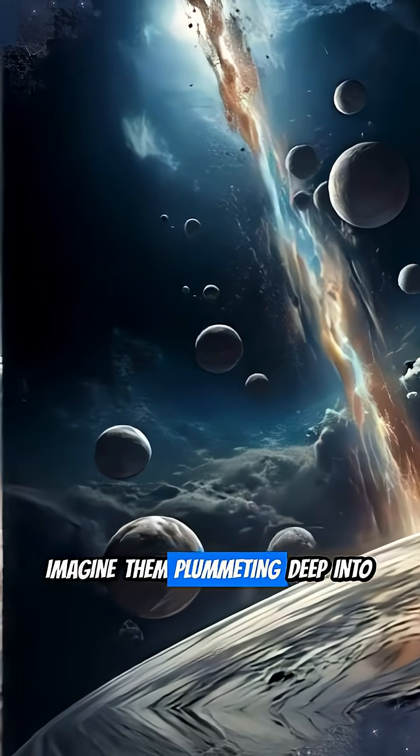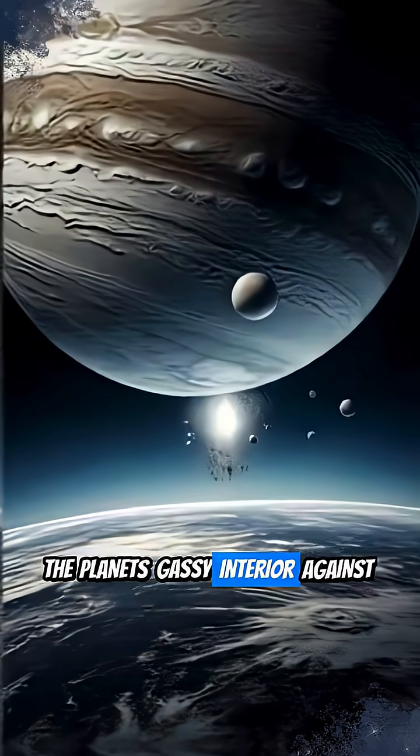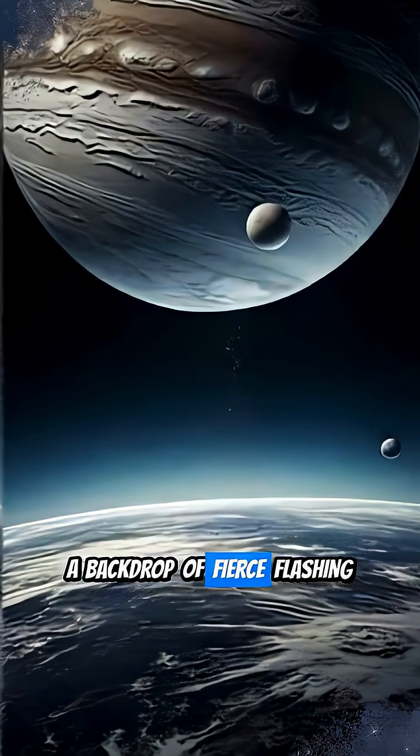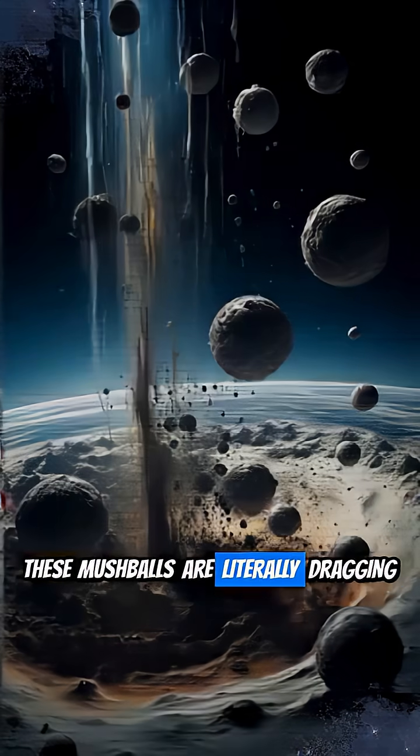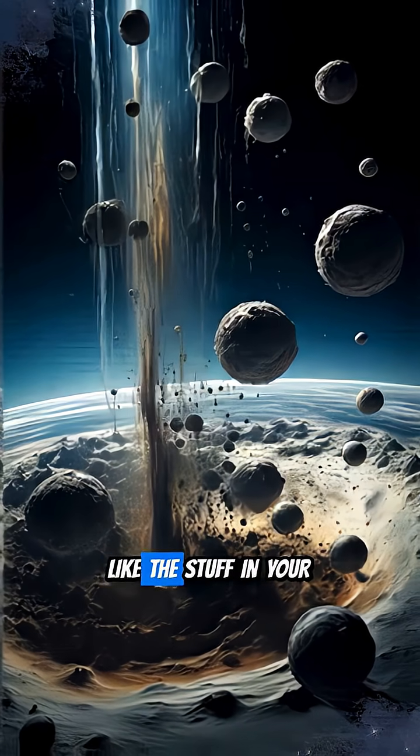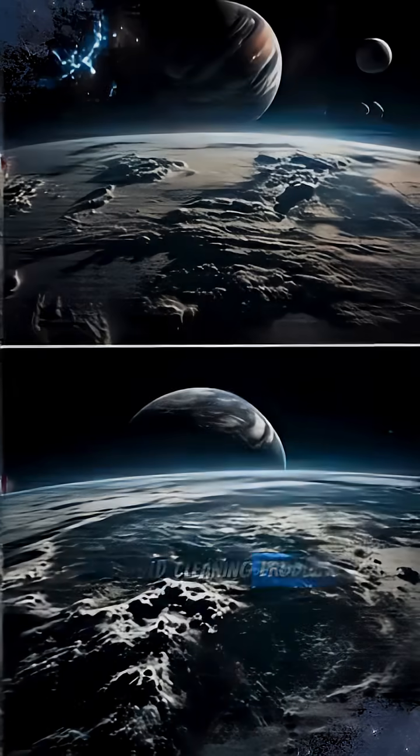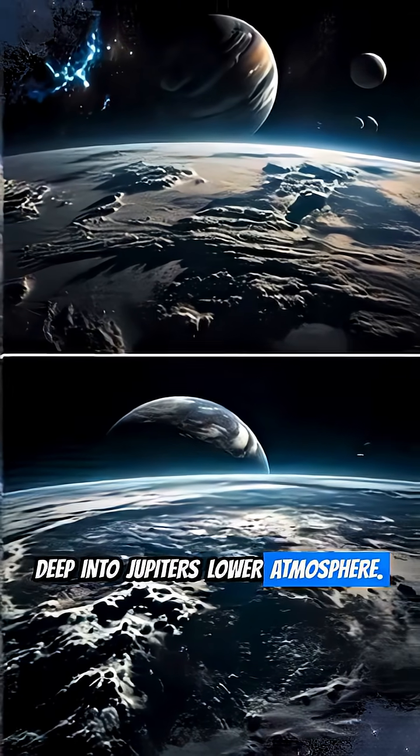Imagine them plummeting deep into the planet's gassy interior against a backdrop of fierce flashing lightning. And here's the kicker. These mush balls are literally dragging ammonia, like the stuff in your household cleaning products, deep into Jupiter's lower atmosphere.